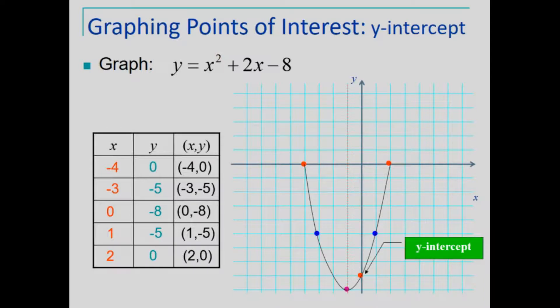Further points of interest, here we have the y-intercept, the point where the graph intersects the y-axis, and was found here with the x value of 0 resulting in a y value of negative 8.